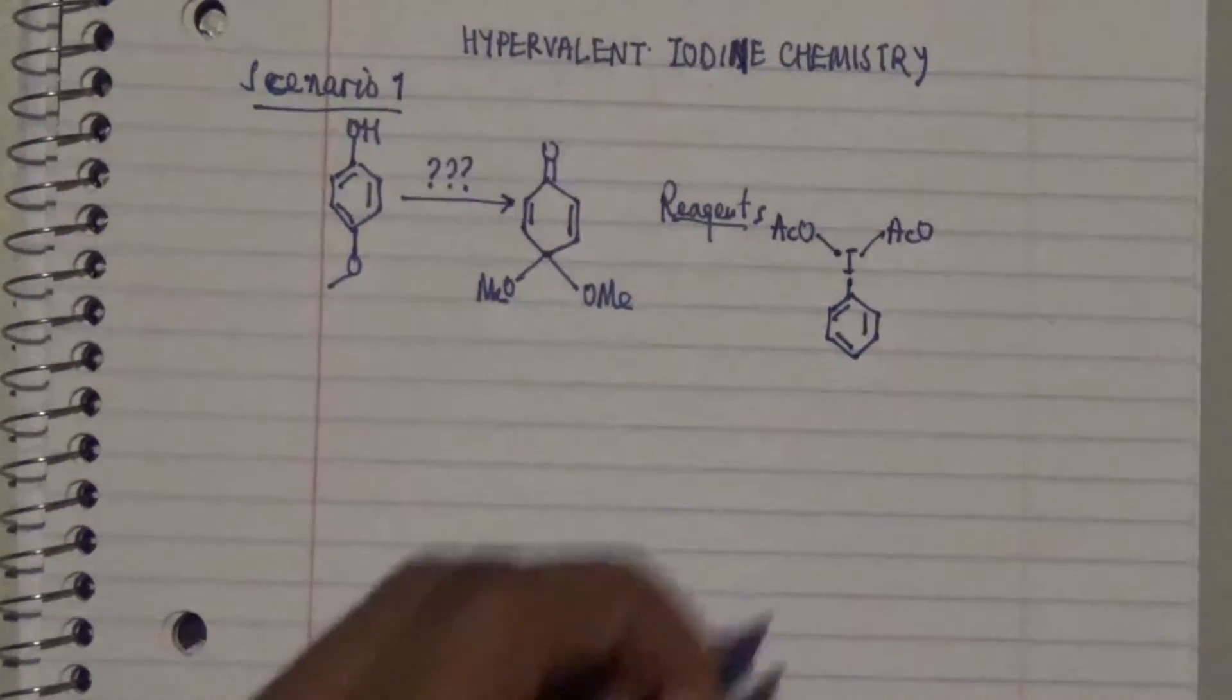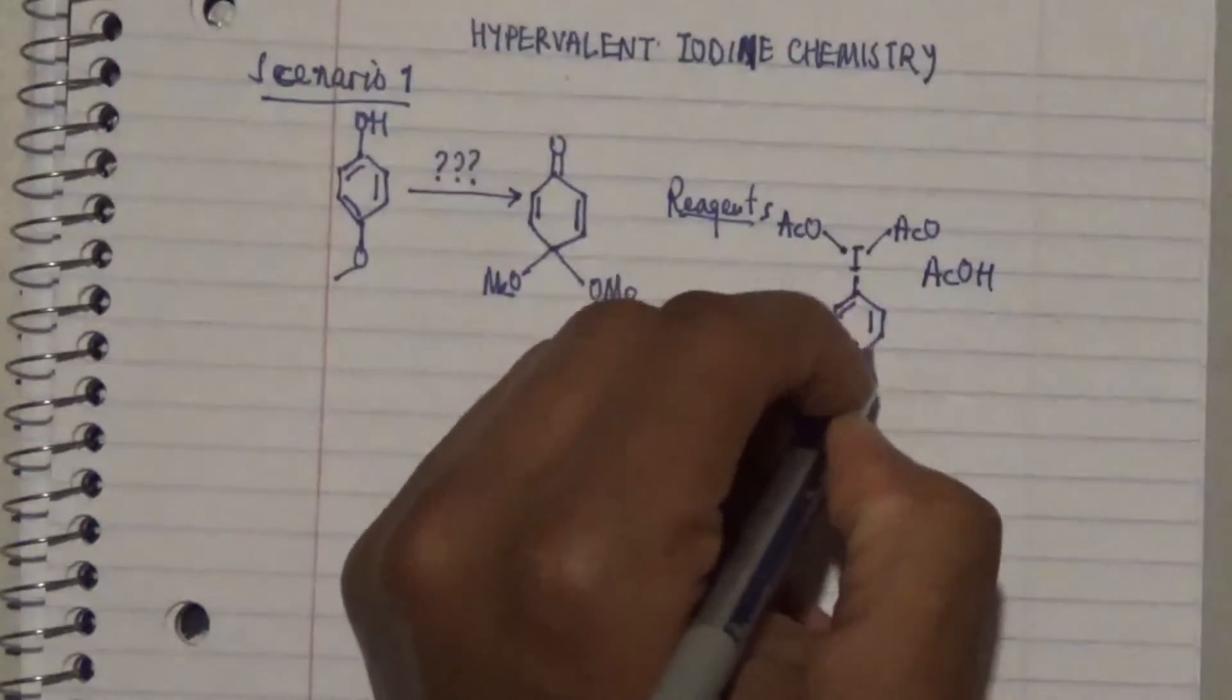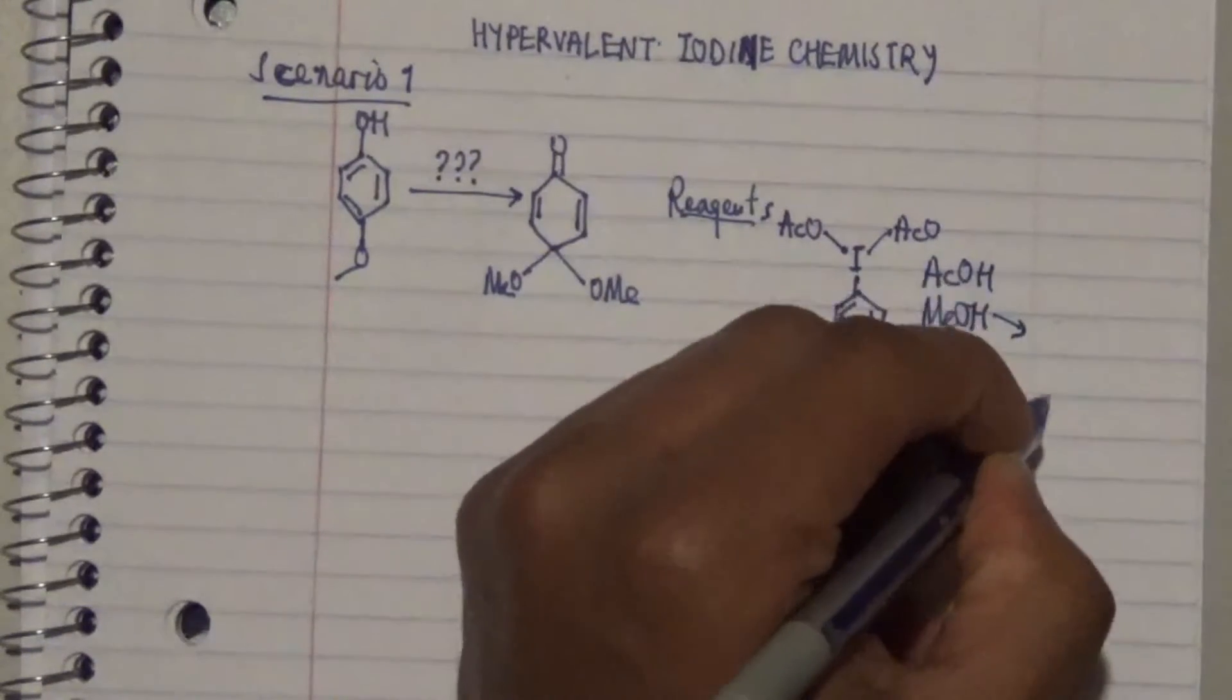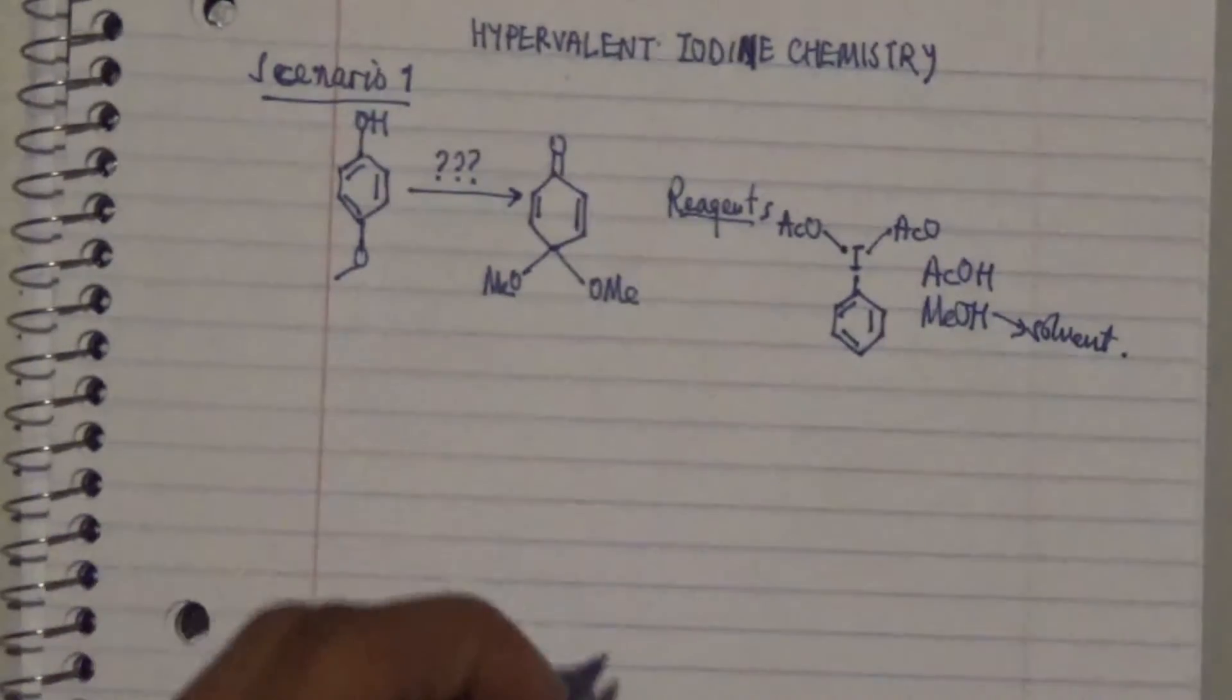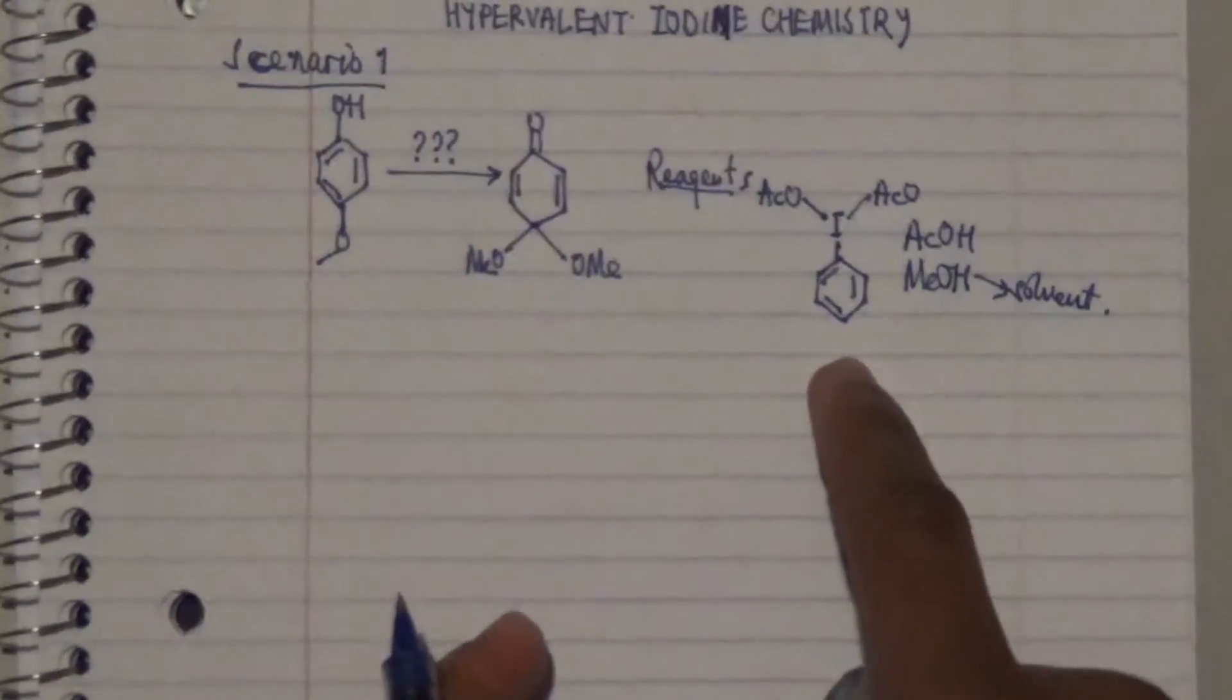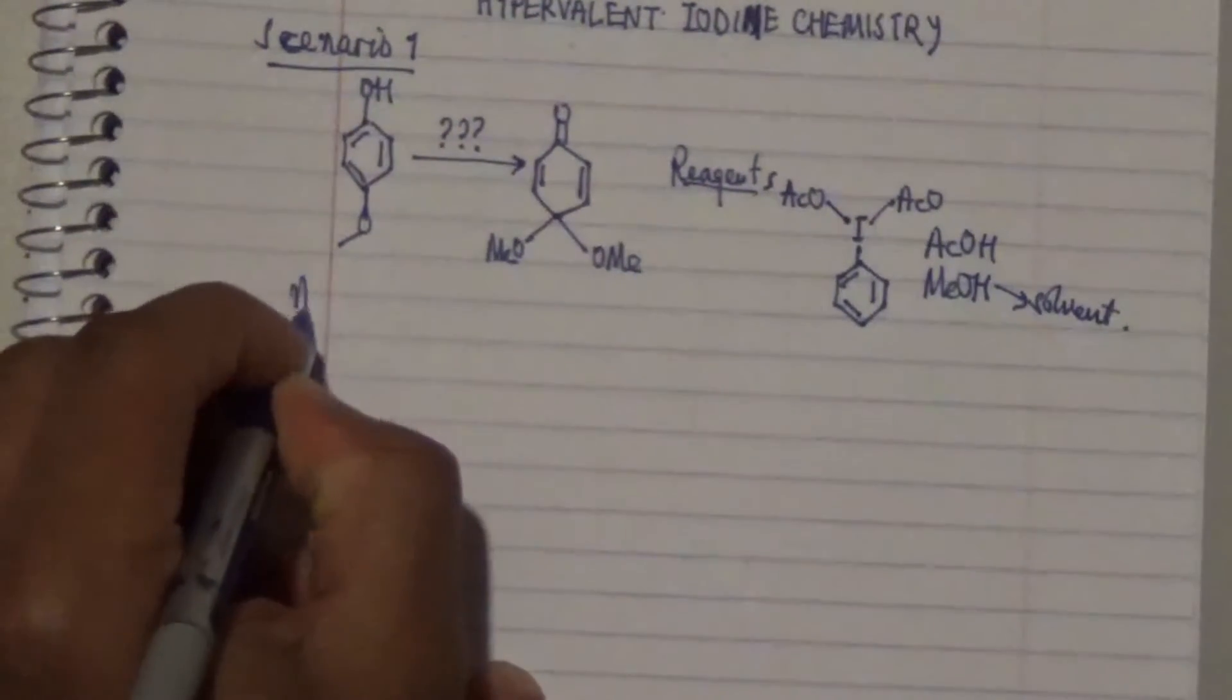Alongside this is methanol, which is actually a solvent in this particular process. What we need now is to find a mechanism that will be able to prove that this particular reagent is actually fit in the conversion of this to that.